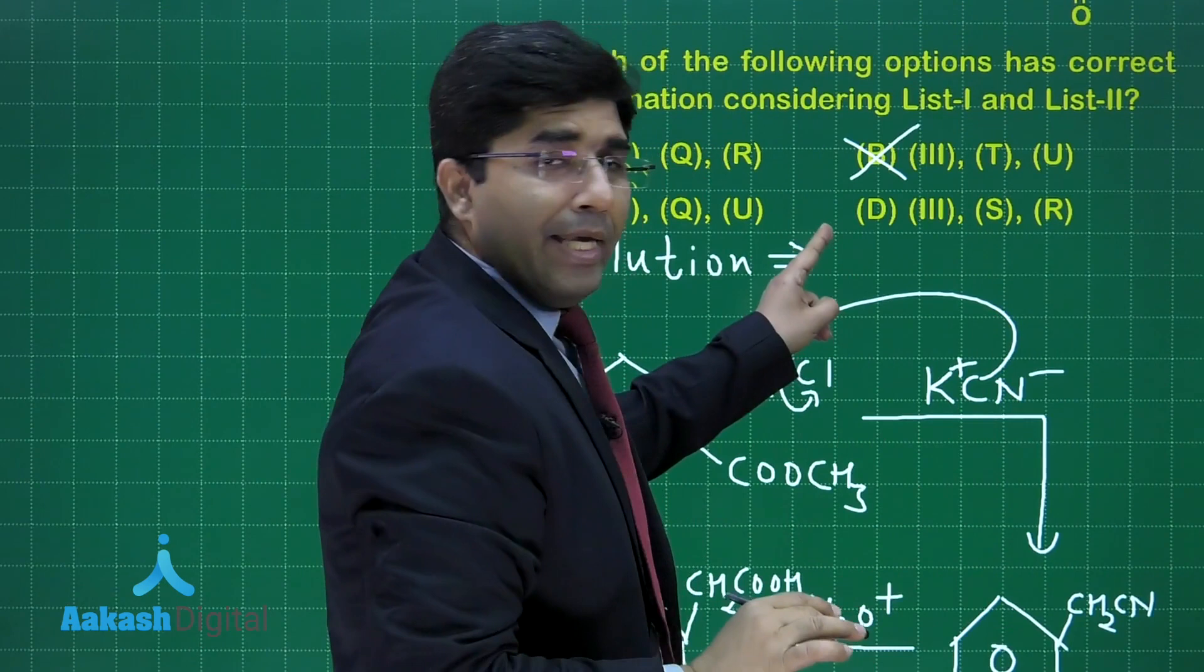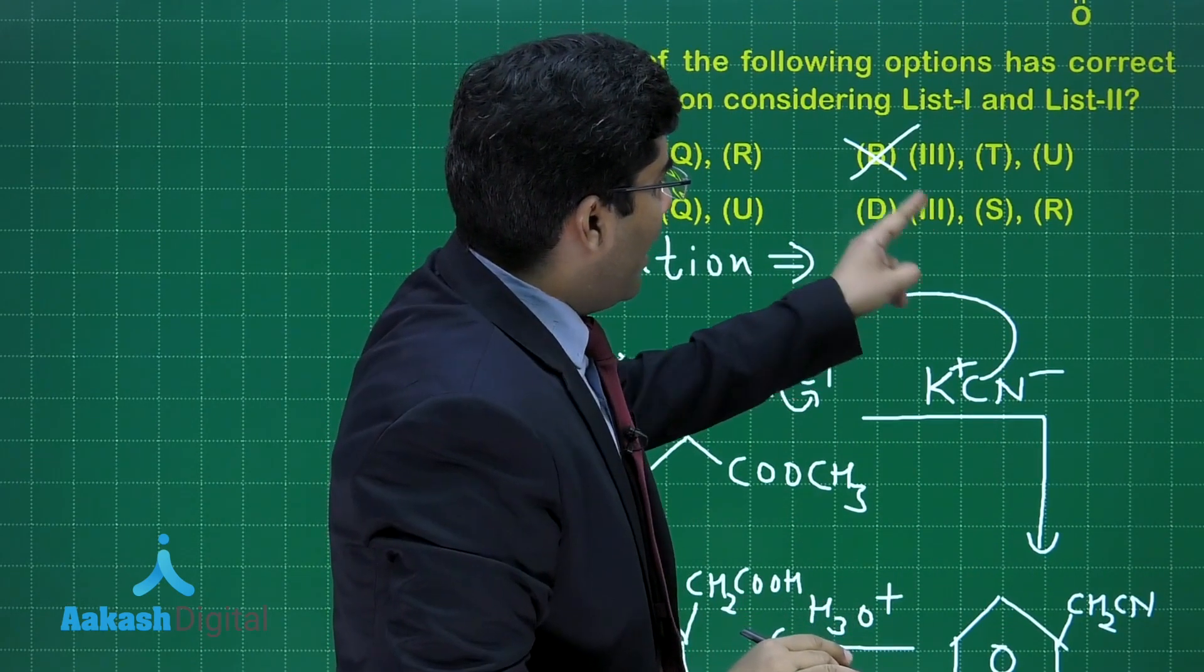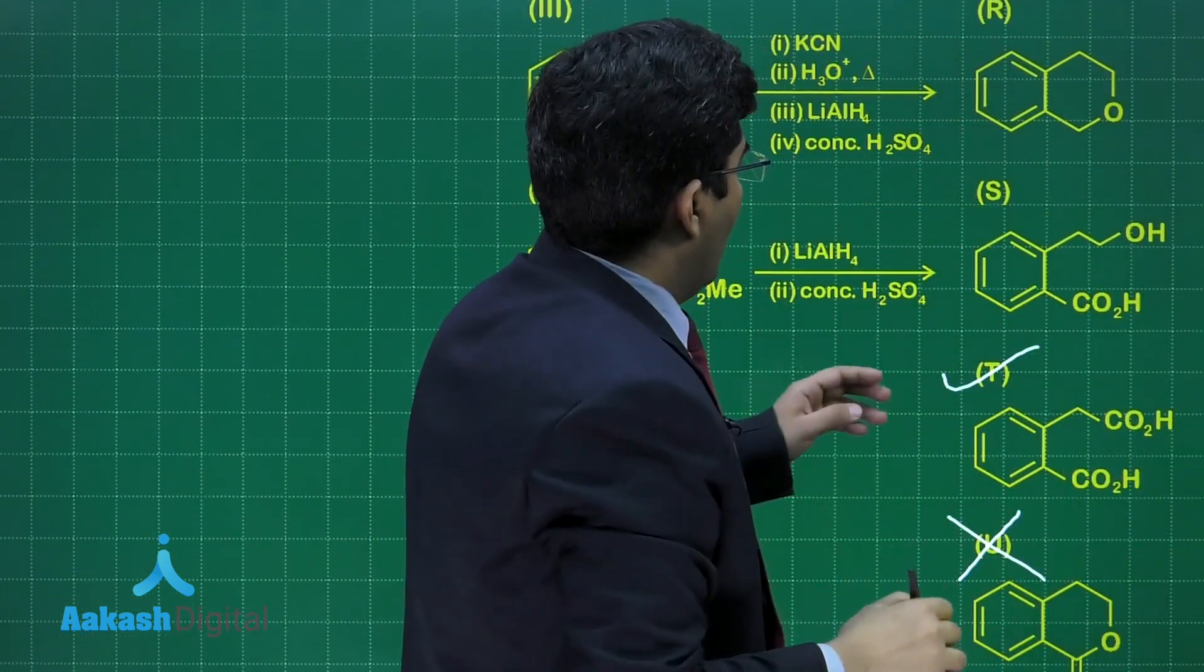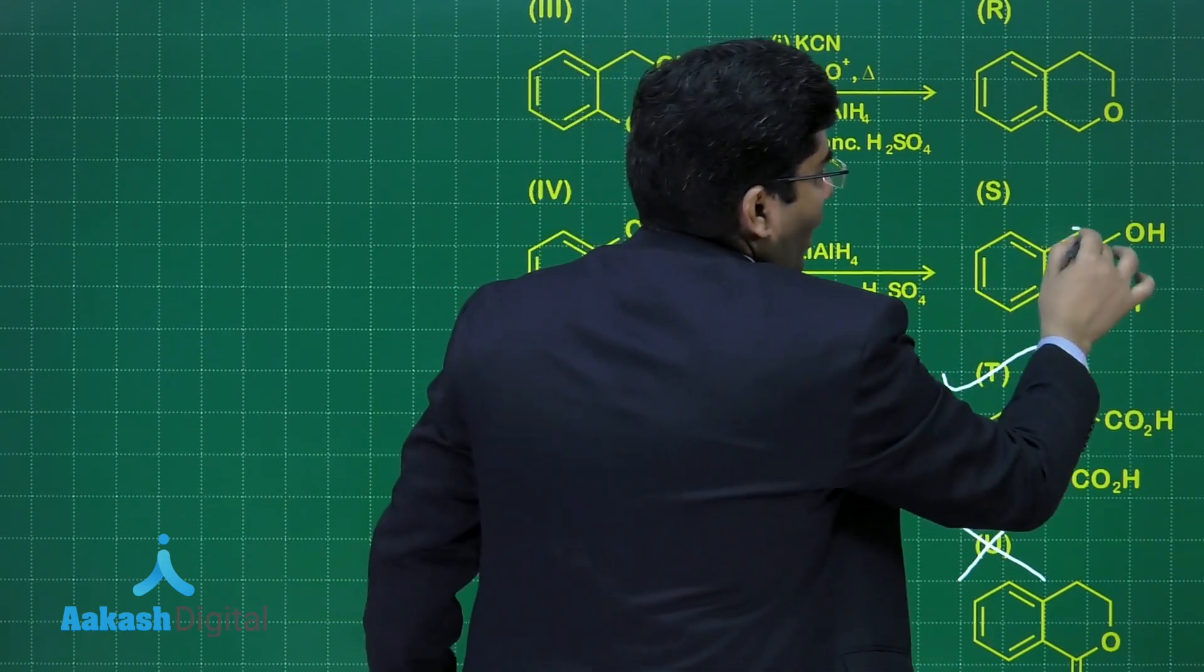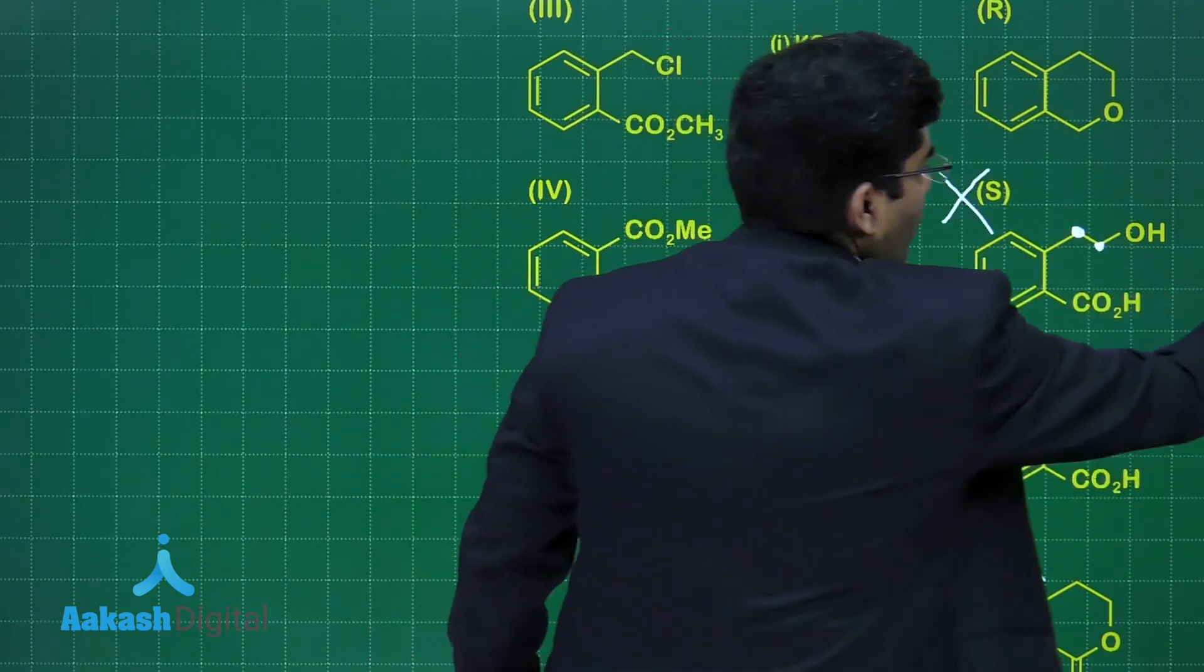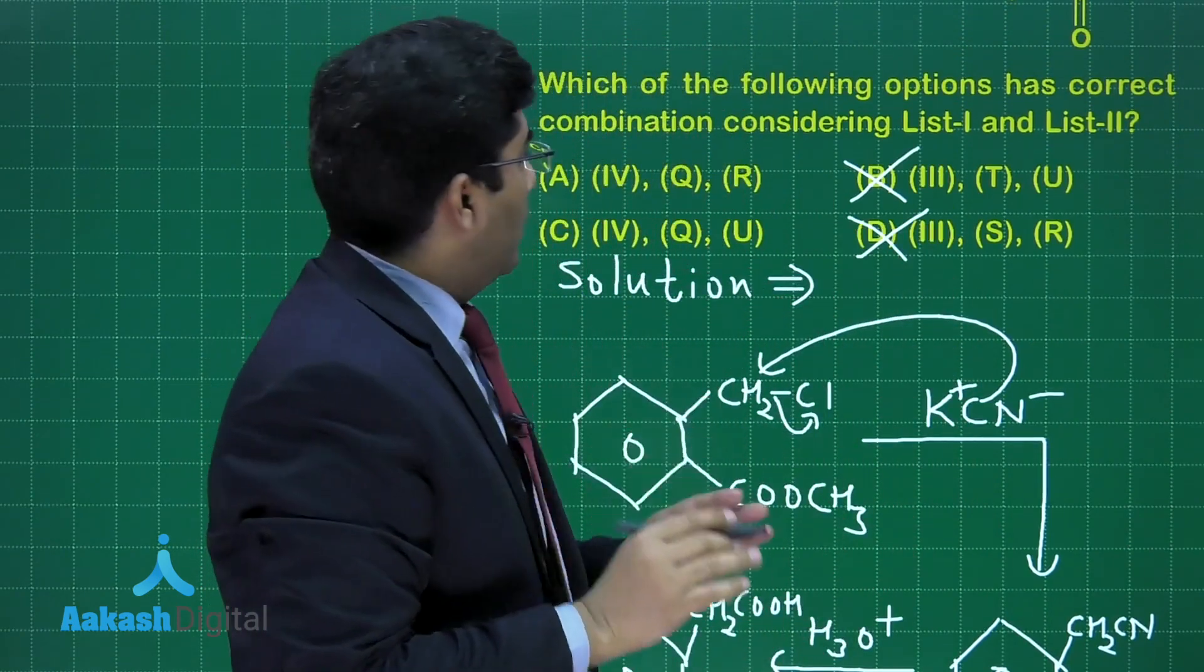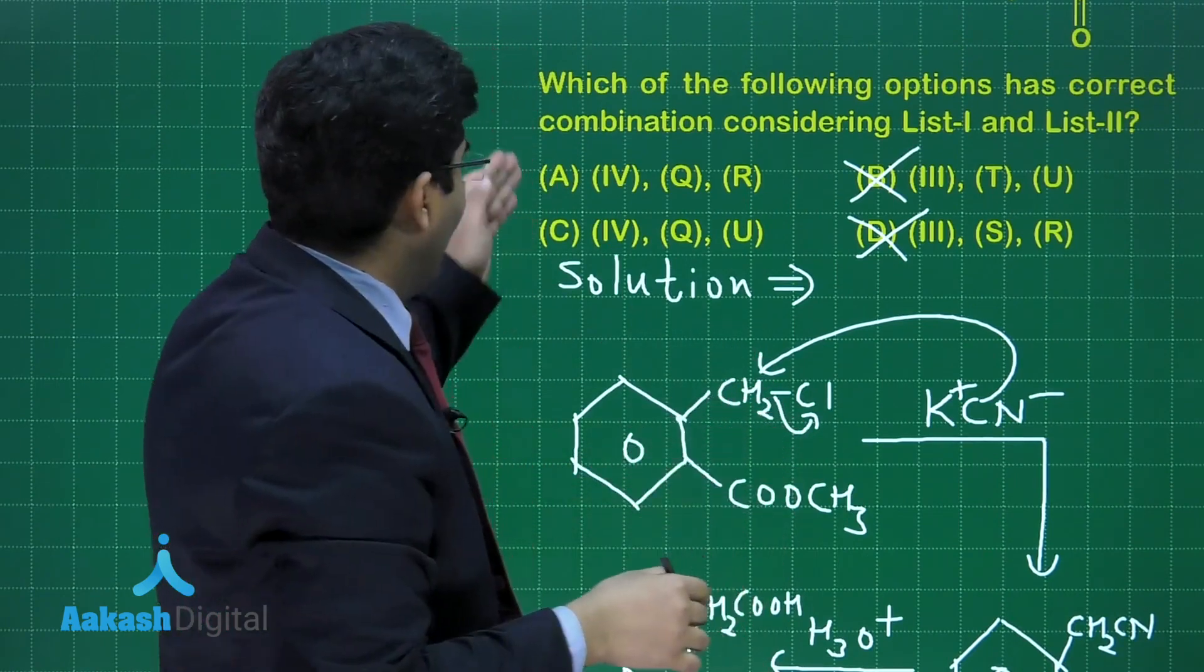In option D, again the third reaction is given and the products are S and R. Let us see what is S and what is R. S is this product having two carbon atoms. That is also not forming. That is why D cannot be the answer. B and D are not the answer. We have to choose from A and C.